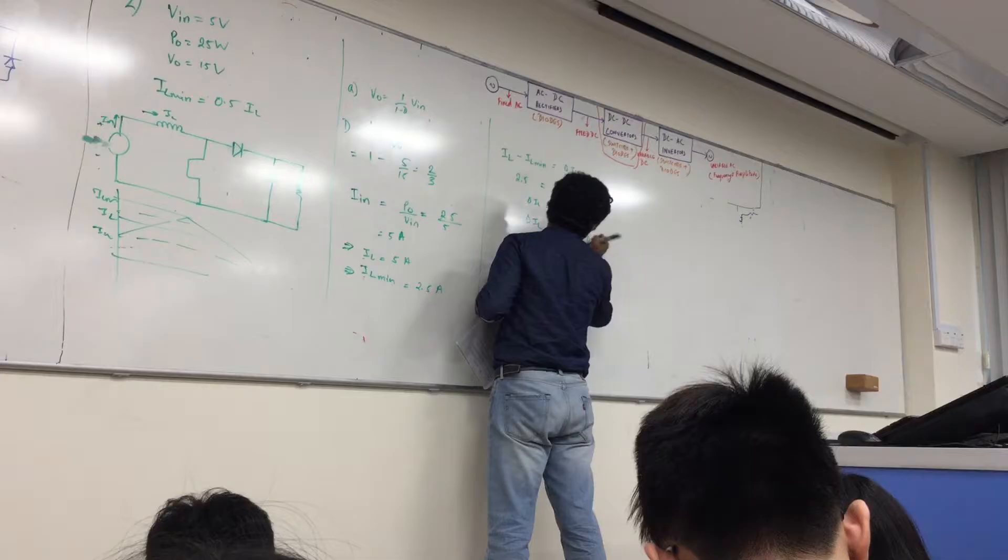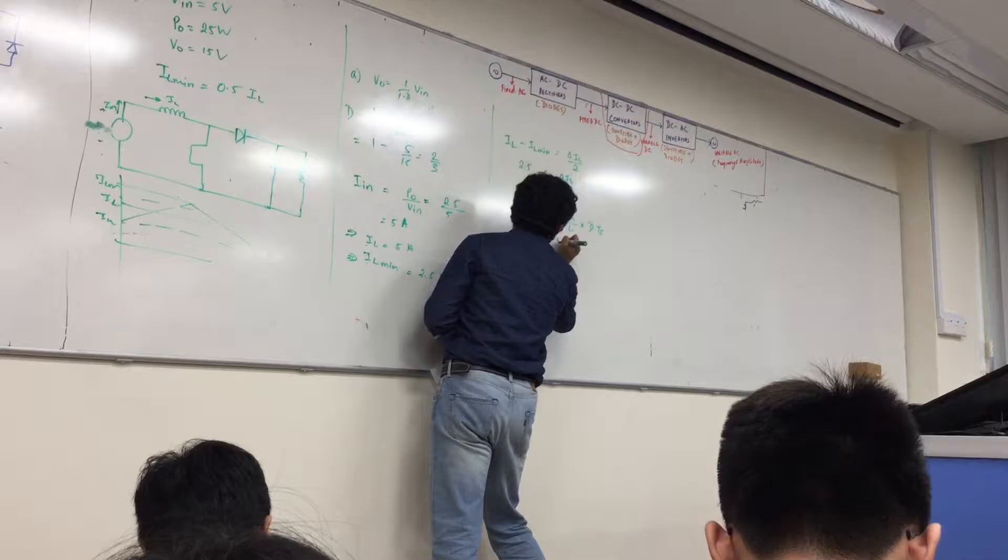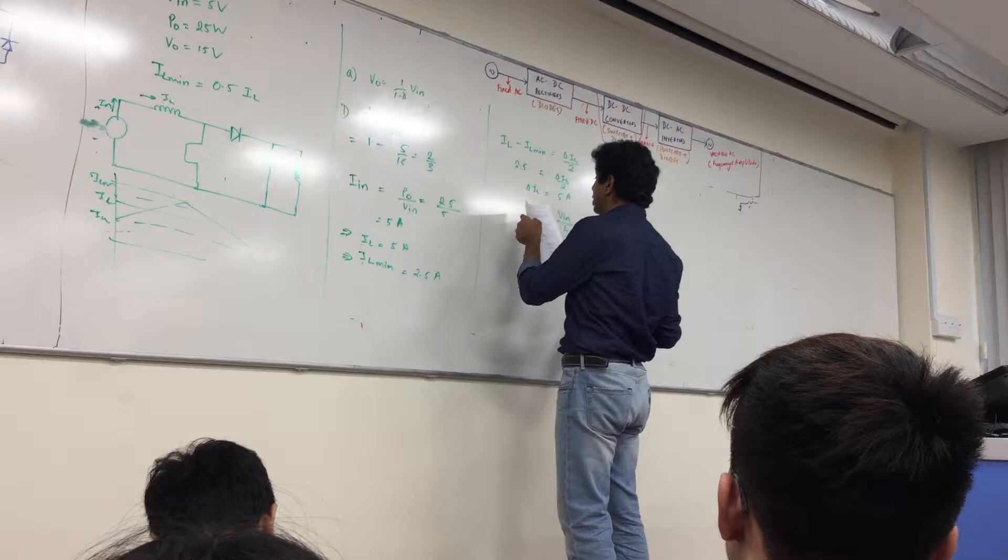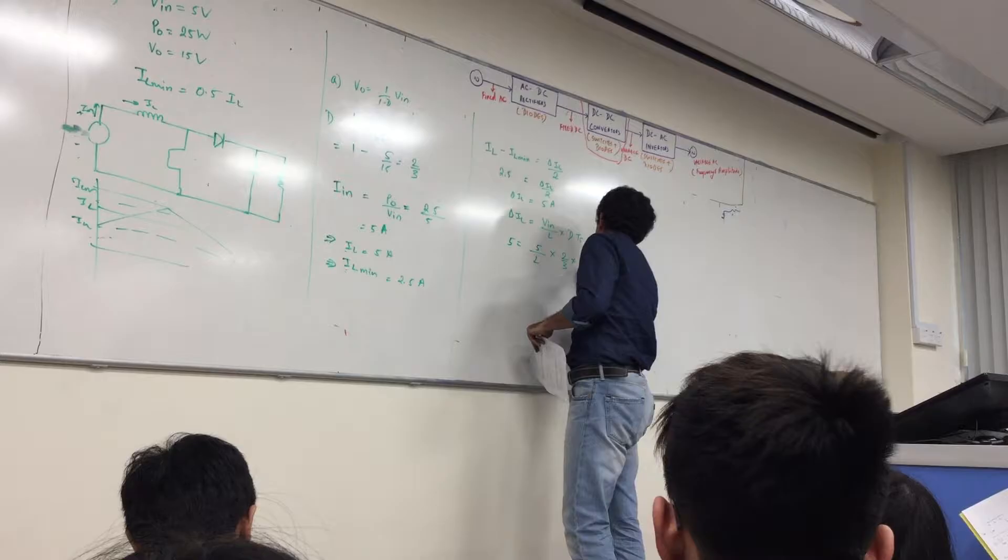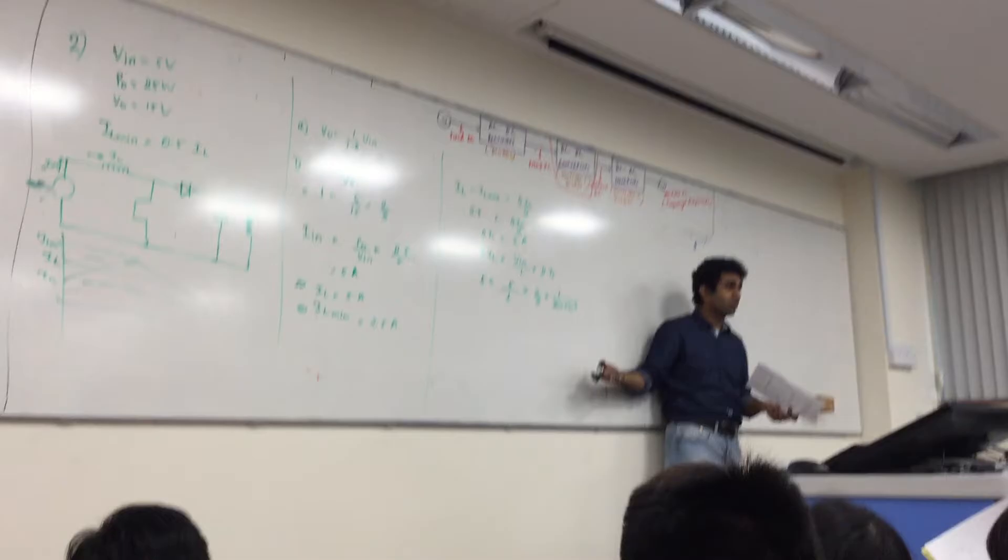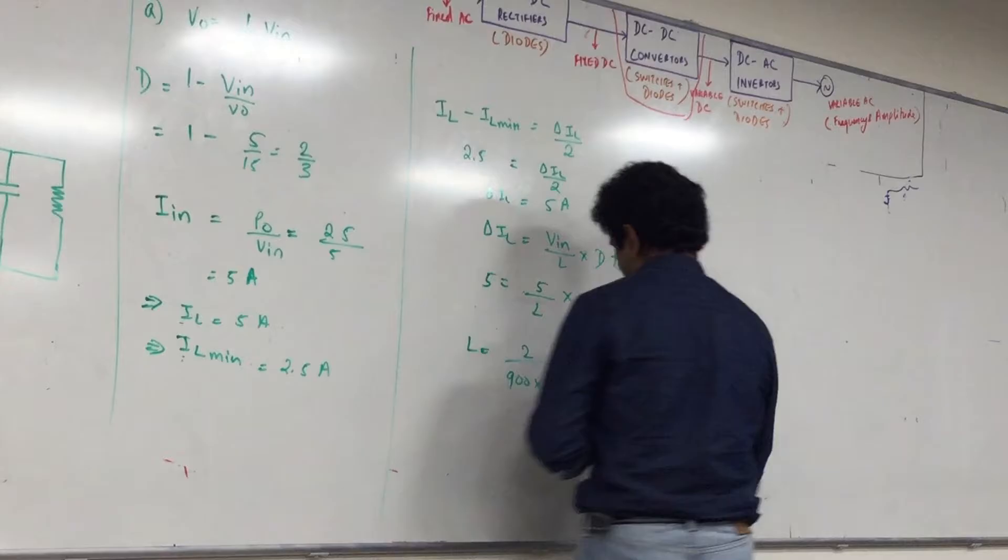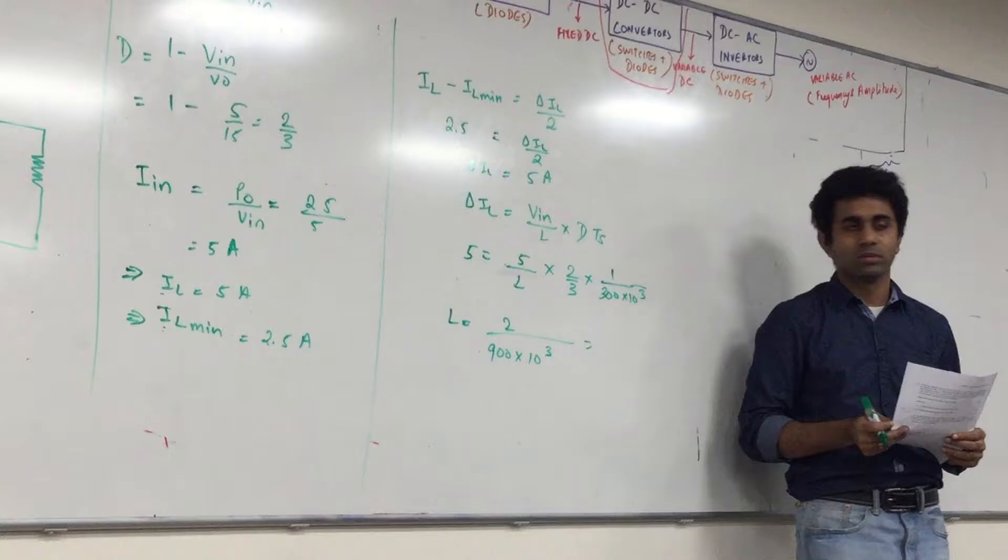So how do I use this now? If I plot it out, I get this is IL, positive slope, negative slope, this is IL-min, this is IL-max, this corresponds to your IL, etc. Right. And I can say IL minus IL-min is delta IL by 2, or 2.5 minus 2.5 is delta IL by 2, or delta IL is...